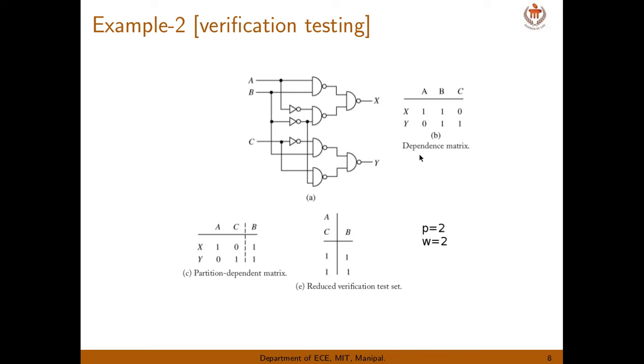Here, the row variable represents output and column variables represent inputs. Now if an output is dependent on a particular input, that cell we will write 1. So in this you can see X is a function of A, B. But it is not a function of C. So we will write A, B as 1, 1. C, below C we will write 0. Similarly, Y is a function of C and B. So we will write B and C column 1. It is not dependent on A, we will write 0.